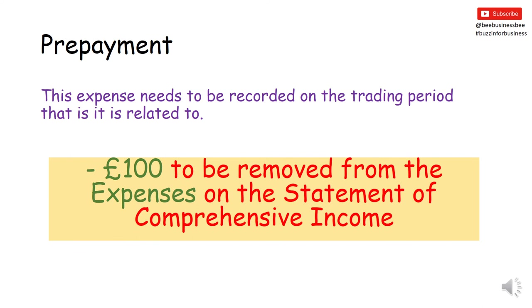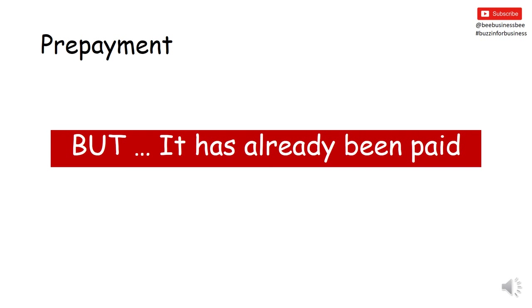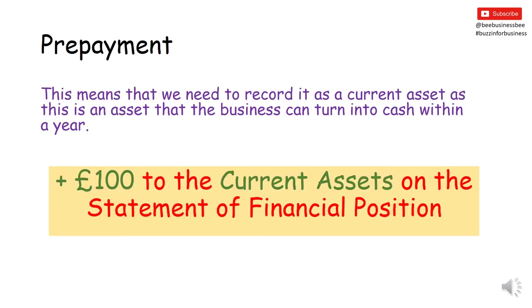We need to record this on the trading period it's related to. So I would need to remove the £100 from my expenses or mobile phone bill section from my Statement of Comprehensive Income, because it's not related to this trading period — it's related to the next trading period. But because it's already been paid, I need to add £100 onto my current assets. Current assets are things that can be turned into cash within a year, and this will be used next month. So I add it onto my current assets on the Statement of Financial Position, showing I'm due to get £100 coming in in the short term.